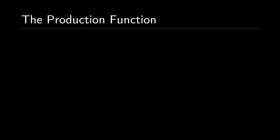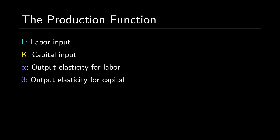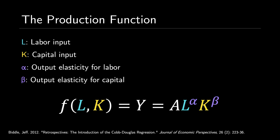If we let L represent labor input, K represent capital input, alpha represent output elasticity for labor, and beta represent output elasticity for capital, we yield the famous Cobb-Douglas production function for two inputs: f of L comma K is equal to Y is equal to A times L to the alpha times K to the beta.